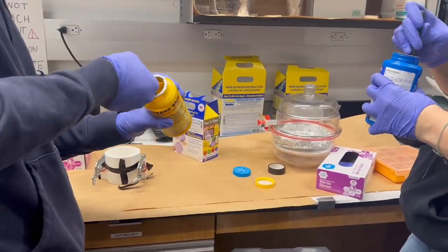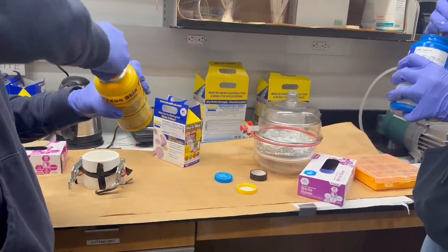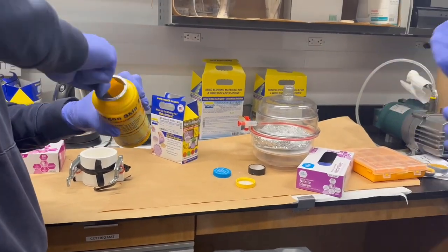We're using Dragonskin 20 by Smooth-On. It is a one-to-one part A and B silicone, so we mixed both part A and B individually just to ensure that they had good consistencies.